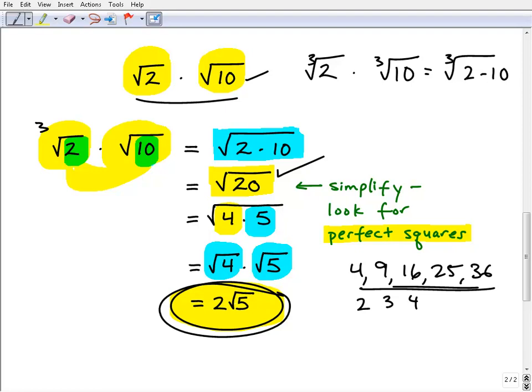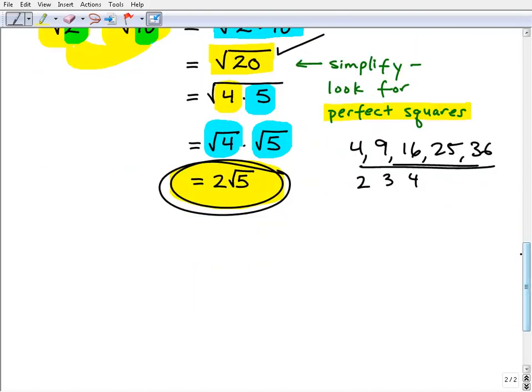But what happens if later on you have something like this? Okay, let's say the square root of x times the square root of z times y times the square root of z. Would you know how to handle that?